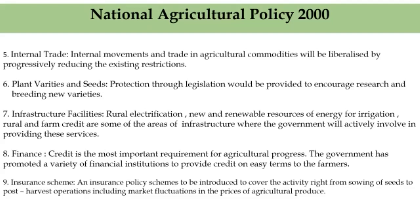The seventh feature is infrastructure facilities. Rural electrification, new and renewable resources of energy for irrigation, and rural and farm credit are some of the infrastructure areas where the government will actively involve itself in providing these services. An increase in the productivity of agriculture cannot be achieved unless the required inputs are made available. Energy is the most important input for any economic activity, and electricity is one of the important forms of energy required for the modernization of agriculture.